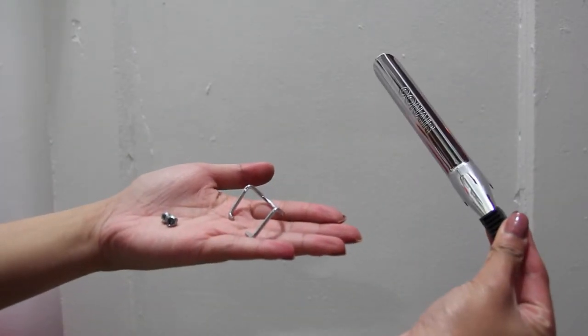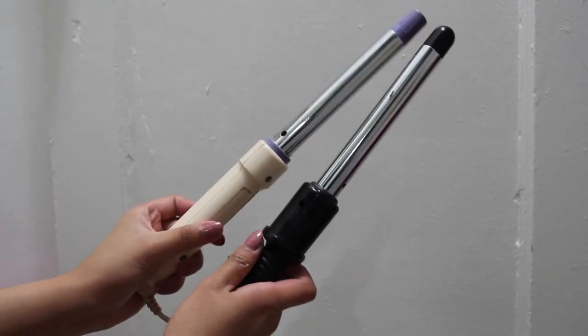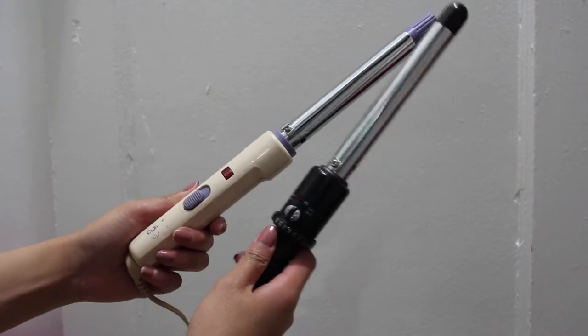As for the pieces that you just unscrewed, just keep them for later in case you want to turn it back to a clip curling iron. And that is it.